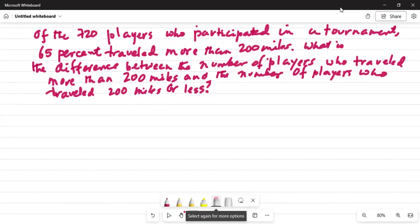Of the 720 players who participated in a tournament, 65% traveled more than 200 miles. What is the difference between the number of players who traveled more than 200 miles and the number of players who traveled 200 miles or less?